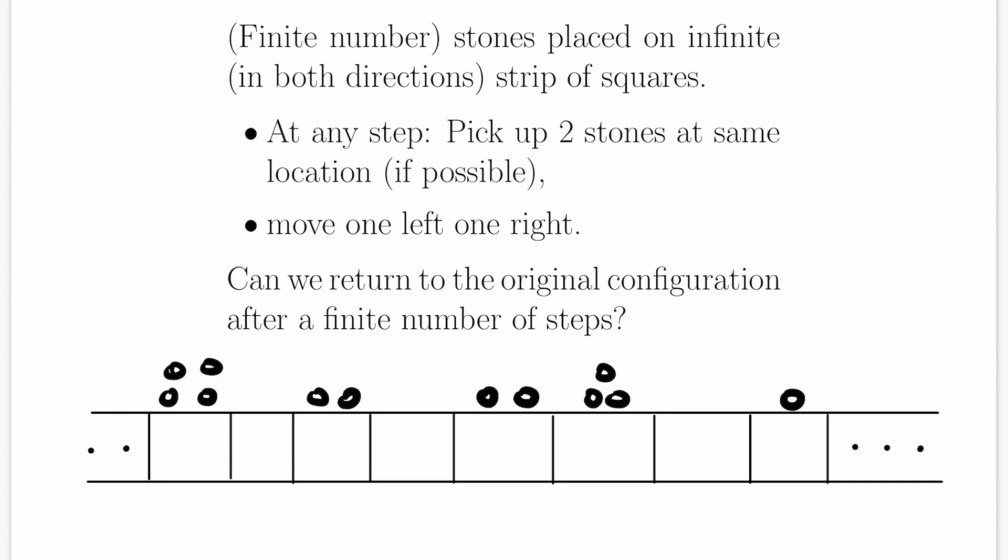For instance, you could move this stone over here and this stone over here, leaving you with a configuration like this. The question is, is it possible to return to your original configuration after a finite number of steps? If you think about this process, you're taking two stones and moving them away in different directions. So you're spreading the center of mass of these stones. Now is there a way to quantify that? We'll select a random square to label as zero, and since we're infinite in both directions, we'll label the squares with positive integers to the left and negative integers to the right.